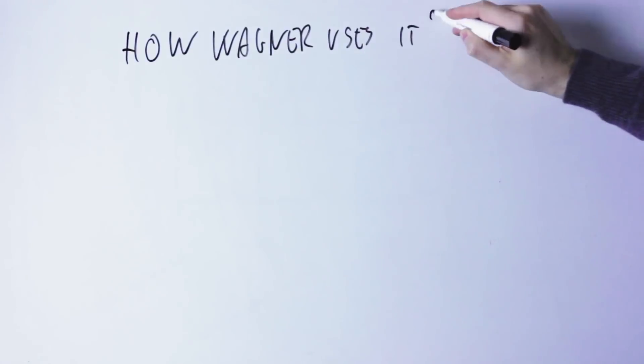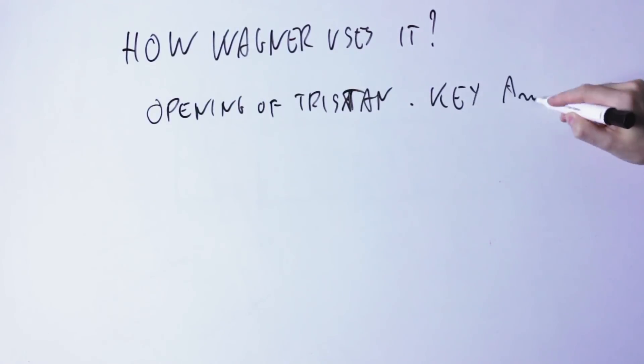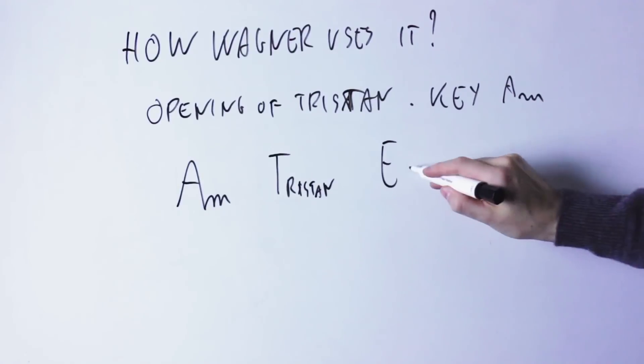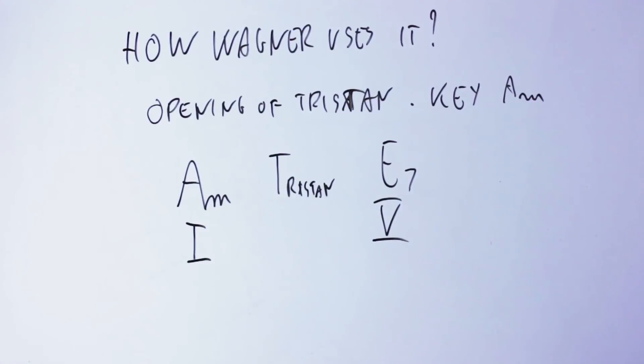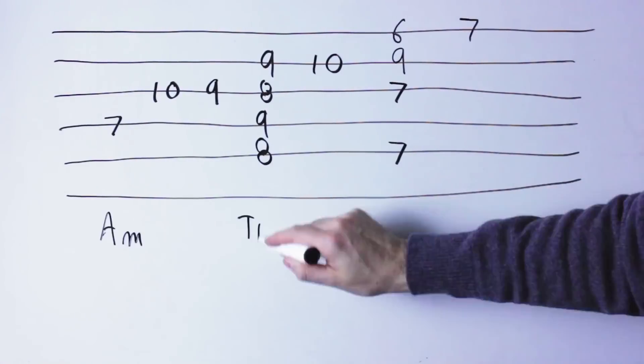Let's go back for a moment to the opening theme of the Tristan. The opening is in the key of A minor and the harmonic structure, the chord progression that is going on, is simply A minor, so the first chord of the key, then the Tristan chord, then E7, which is the fifth chord of the key.